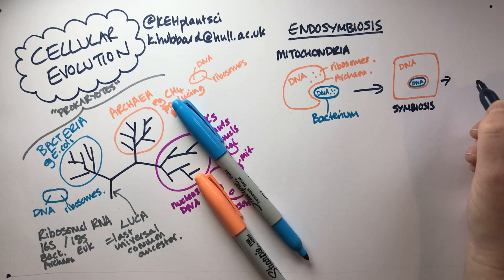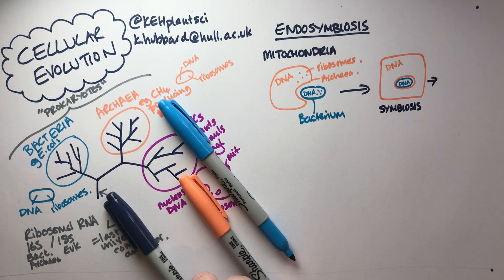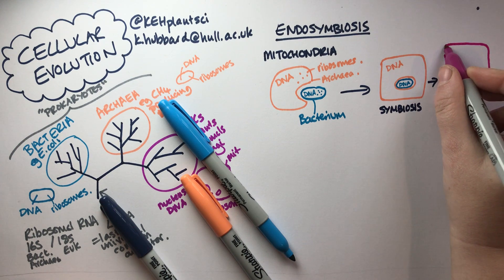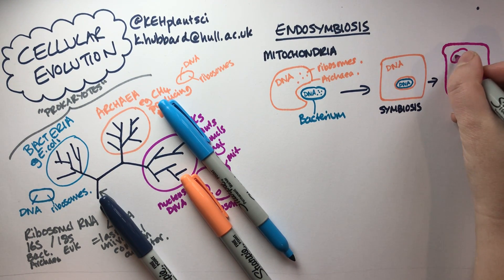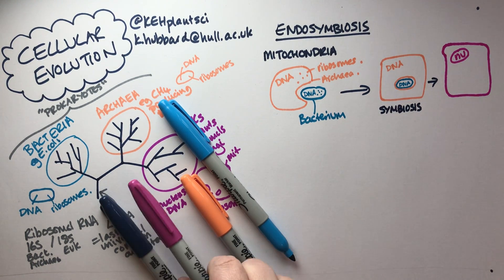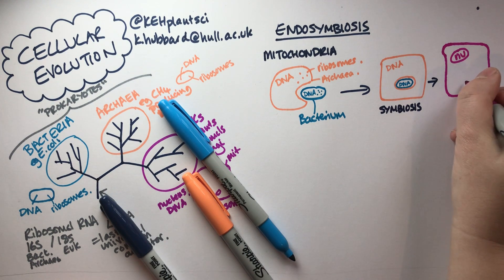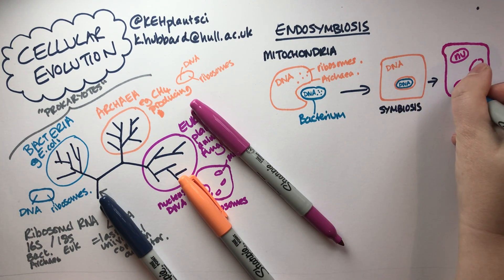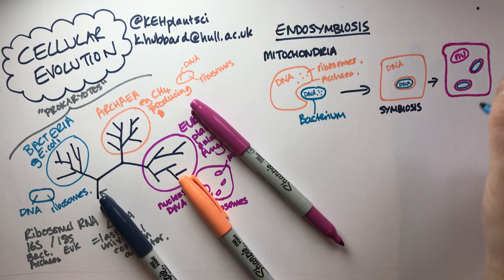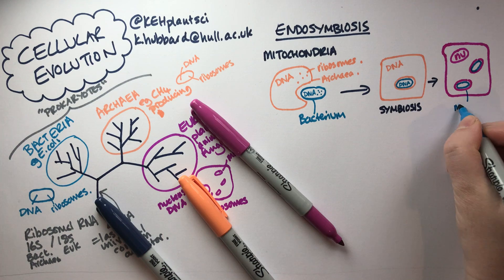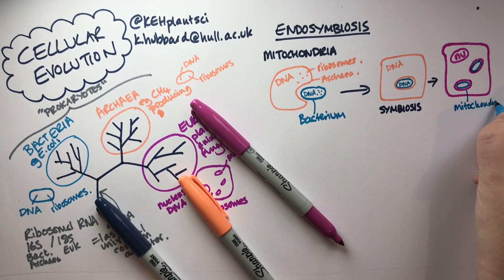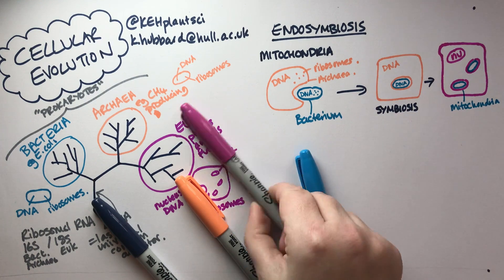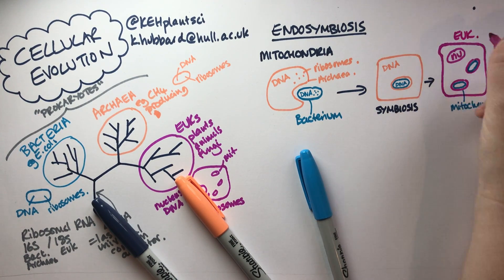Over evolutionary time what we get is the modern eukaryotic cell. At some point it develops a nucleus — we're not actually very sure how that happened — but what we end up with inside the eukaryotic cell are mitochondria. If we sequence the genome of the mitochondria it looks more like a bacterium than anything else. So mitochondria are effectively bacteria that got permanently trapped inside a larger cell that became the modern eukaryotic cell.